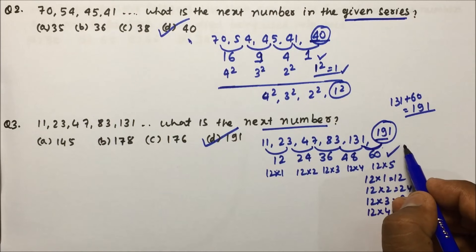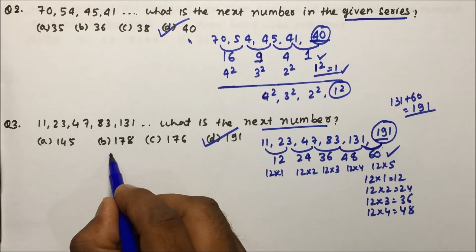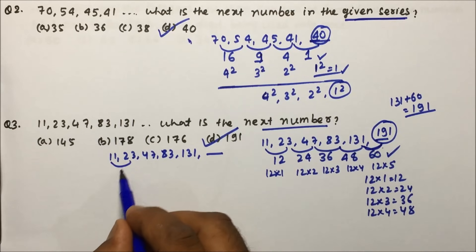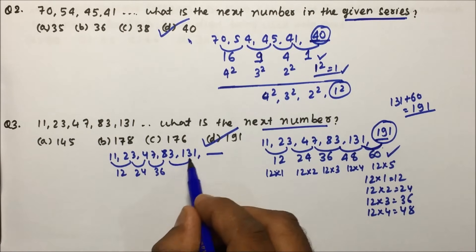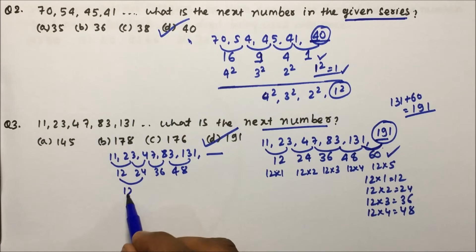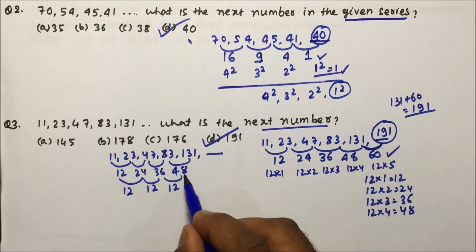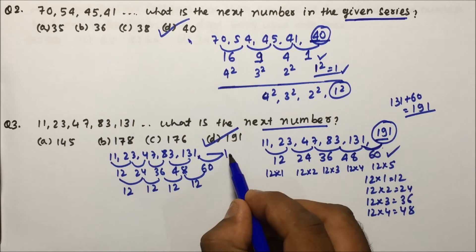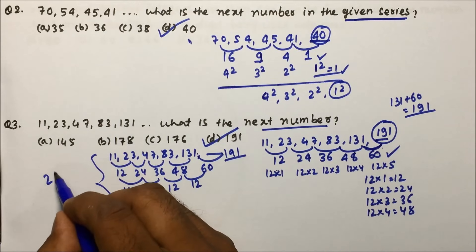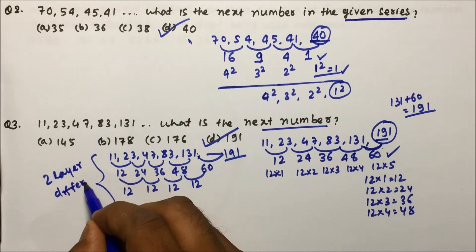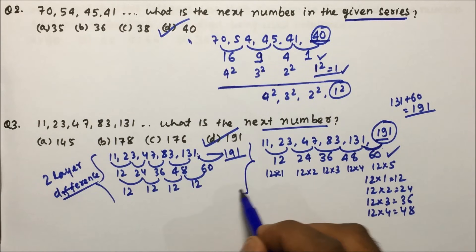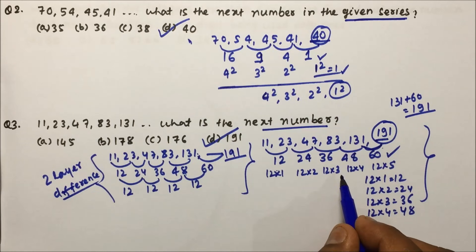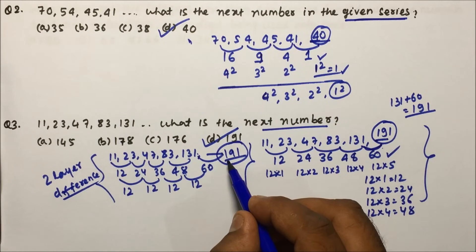In series questions, there may be more than one logic. Here's another approach — two-layer difference: the differences 12, 24, 36, 48 themselves differ by 12 each time. So the second-layer difference is always 12, giving next difference as 48 + 12 = 60, and 131 + 60 = 191. Whatever logic you get, you should arrive at the correct answer.